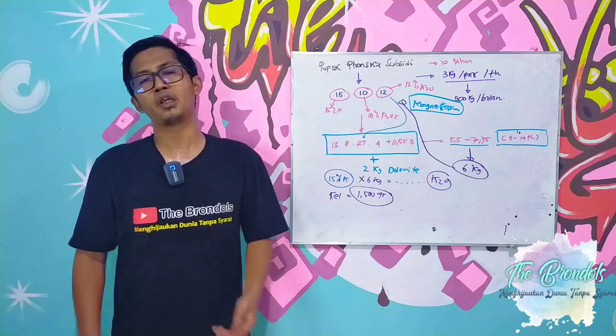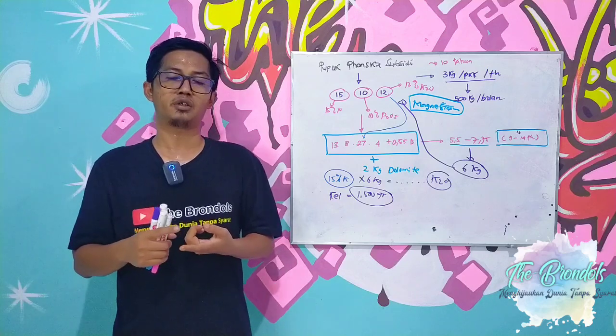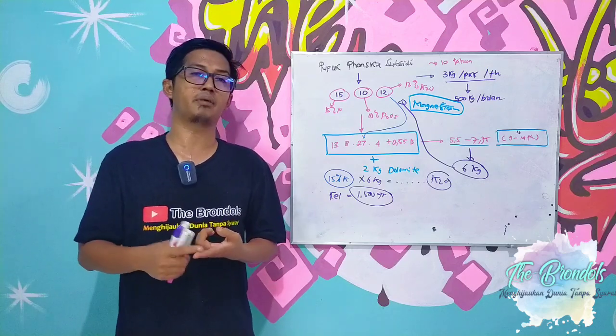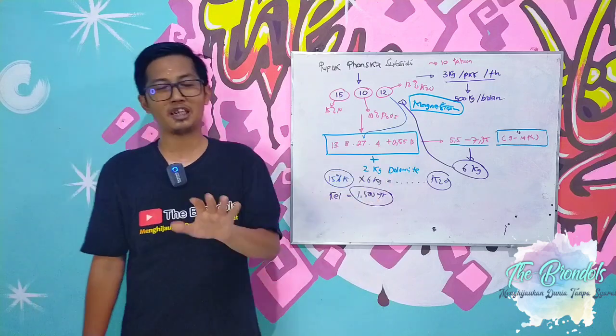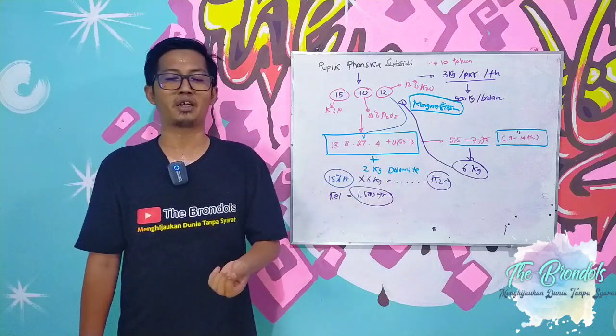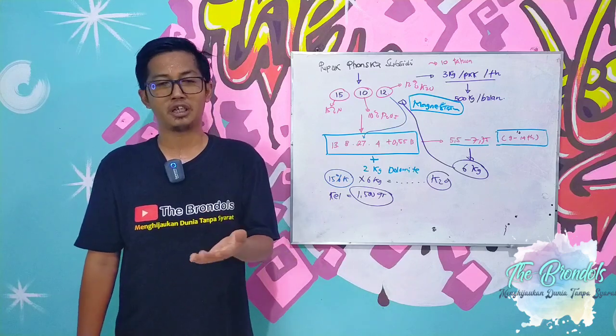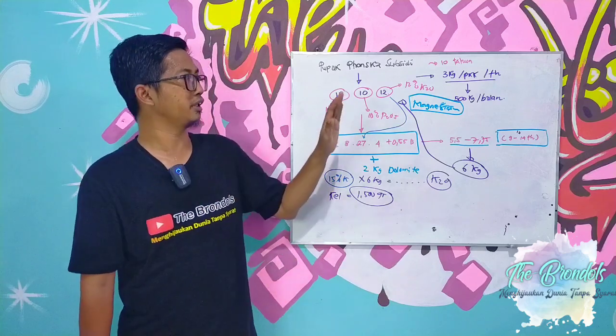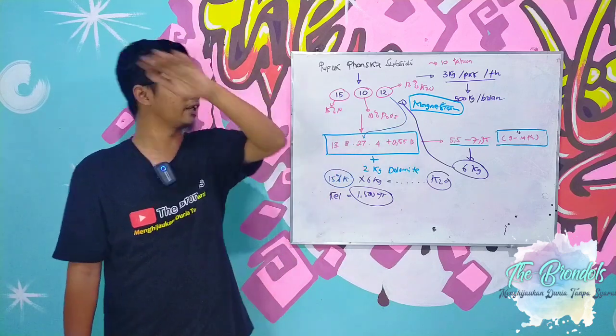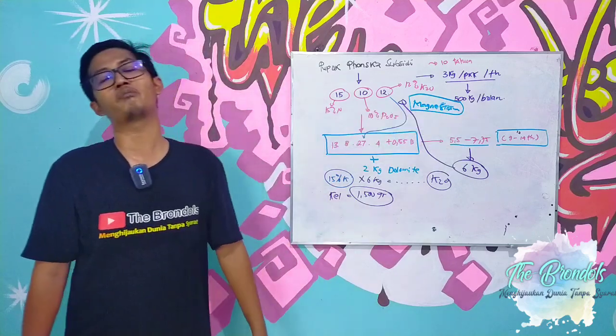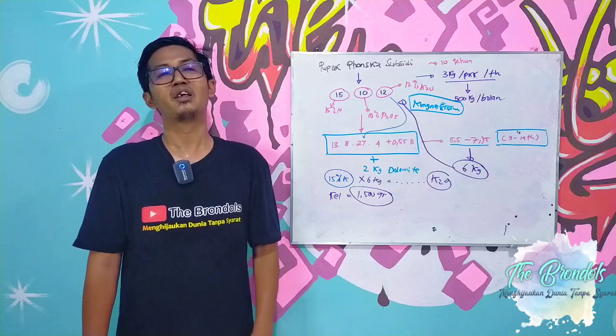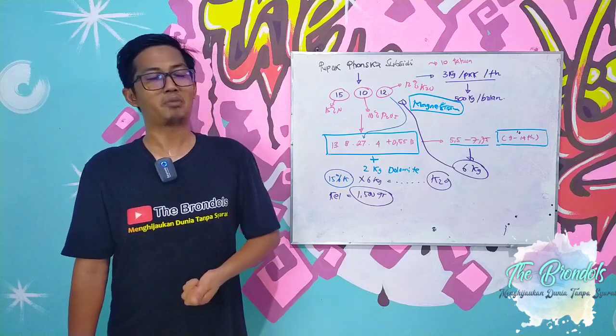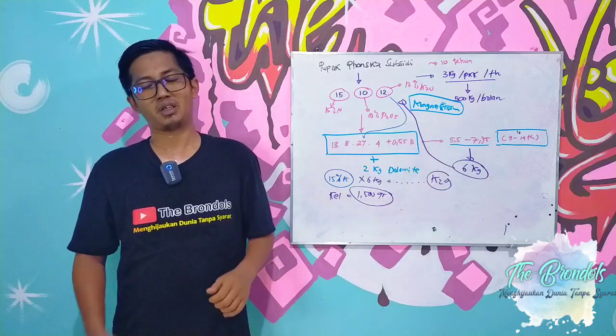The second is adding dolomite, because here the magnesium is very low or even non-existent. So if dolomite or kieserite is not added, clearly - why do I recommend dolomite? Because dolomite is cheap and easy to find compared to kieserite. Then secondly, when we want to rehabilitate with only 500 kg per month production, that's very far from normal. So for good absorption, use dolomite first.